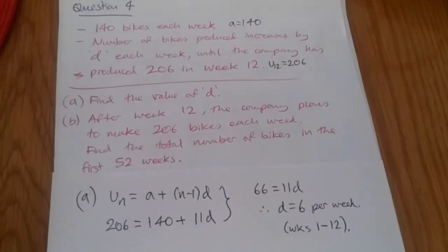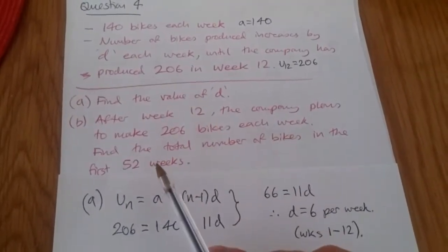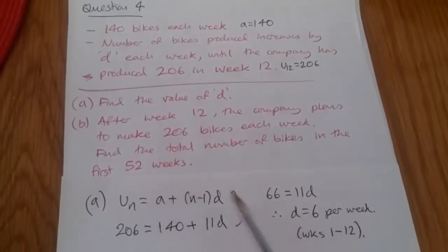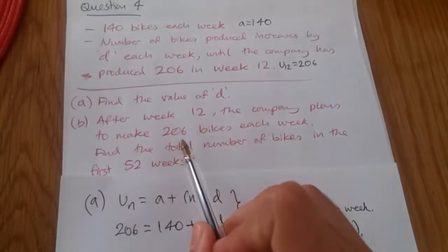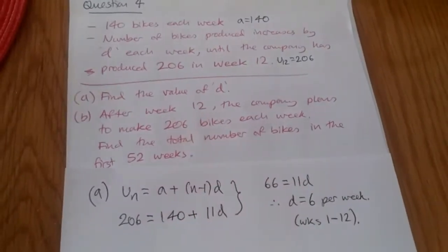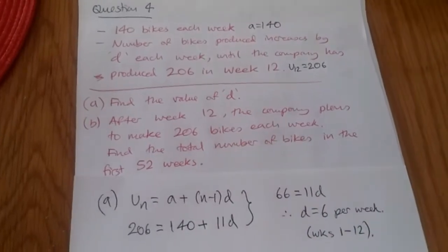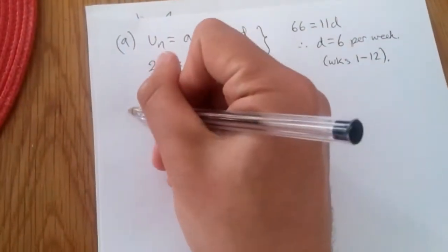So after week 12, the company plans to make 206 bikes each week. Here they're asking us to find the total number of bikes in the first 52 weeks. So let's just understand this. We know that after week 12, it caps at 206. And we know for the remainder period of the 52 weeks, it will still be 206. Alright, so let's have a shot at this.